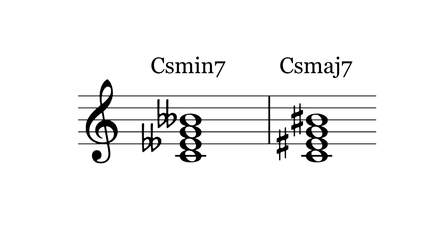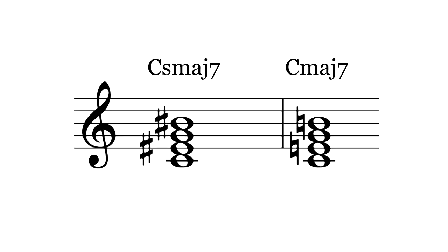The supermajor 7th chord is quite dissonant because of the supermajor 7th interval. One very nice use of this chord is as a suspension above the parallel major 7th chord.